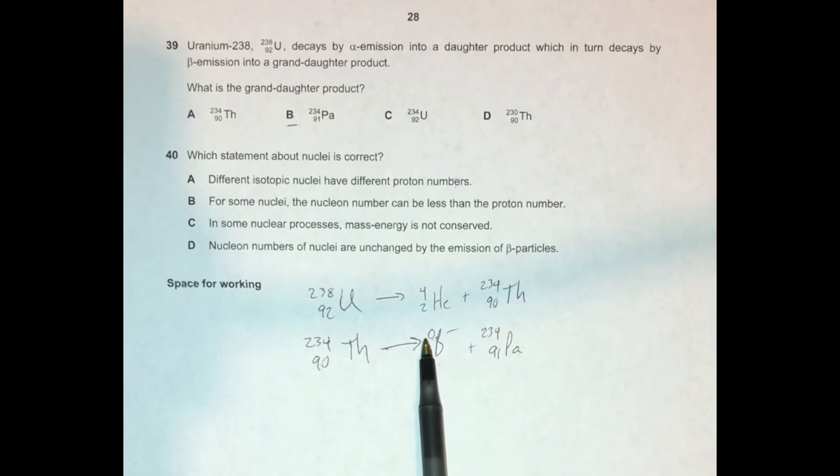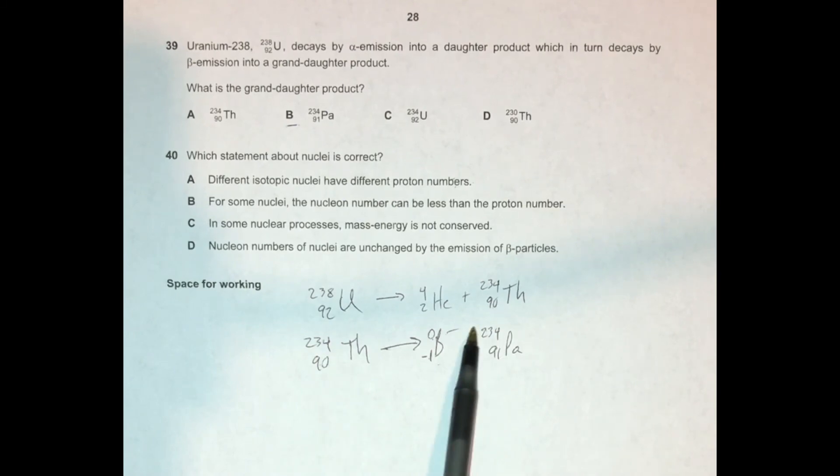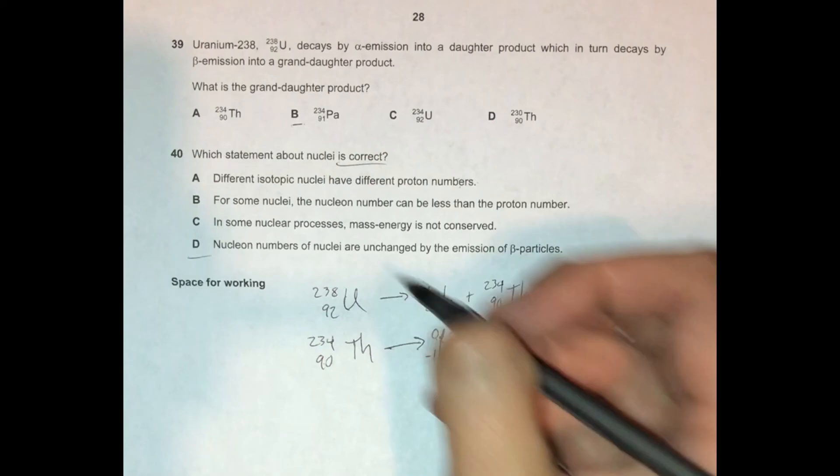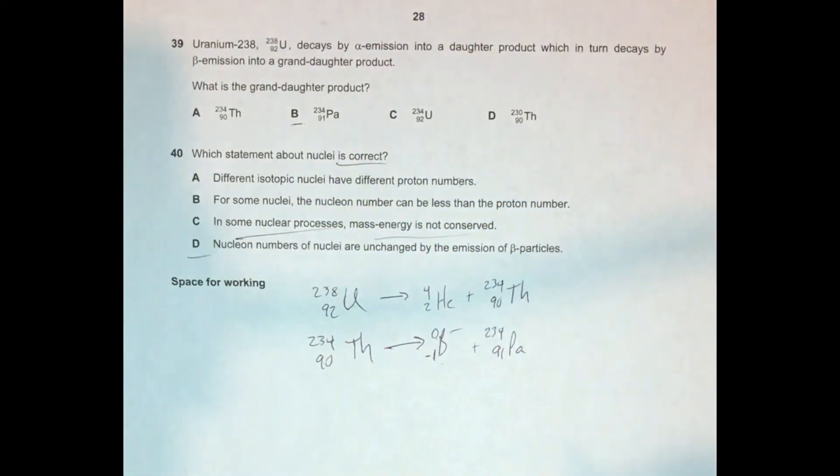And say that nucleon numbers of nuclei are unchanged by the emission of beta particles. And that's what we really talked about here. And this zero here is kind of the reinforcement of that idea. The nucleon numbers of nuclei - so like this thorium atom that we have here are unchanged. And so when this thorium-234 became protactinium-234, it still had 234 nucleons. All we did was swap one of these neutrons for a proton. But remember, this number includes all the protons and neutrons. And so the total nucleon number didn't change, but the proton number did. And we kicked out this electron, this beta minus particle. So here, choice D is correct. I'll update the video if in the future we do indeed discover some nuclear process where mass energy is not conserved. That would be big news.